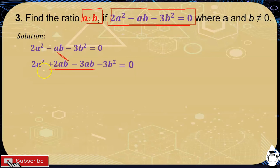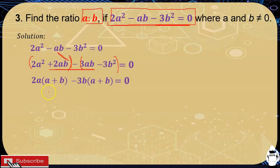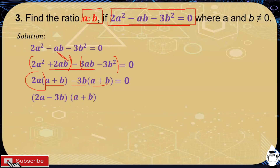Factoring by grouping: from the first two terms, factor out 2a to get 2a times the quantity a plus b, since 2a times a is 2a squared and 2a times b is 2ab. From the last two terms, factor out negative 3b to get negative 3b times the quantity a plus b. Then factor out the common factor a plus b, giving us the quantity 2a minus 3b times the quantity a plus b equals 0.